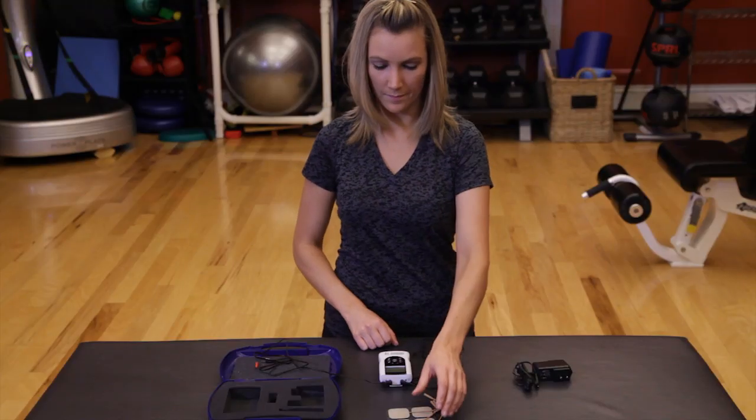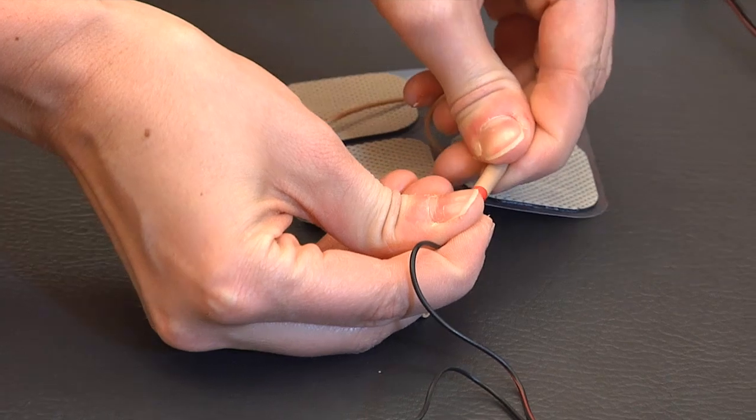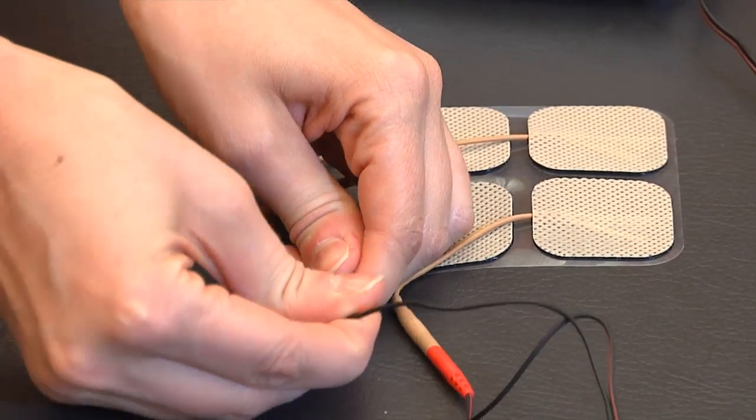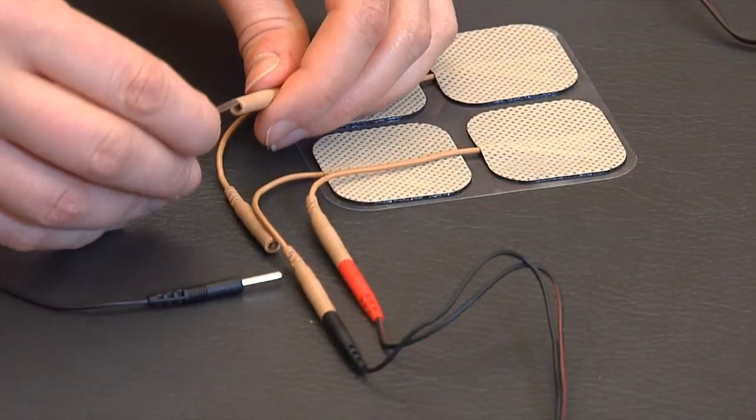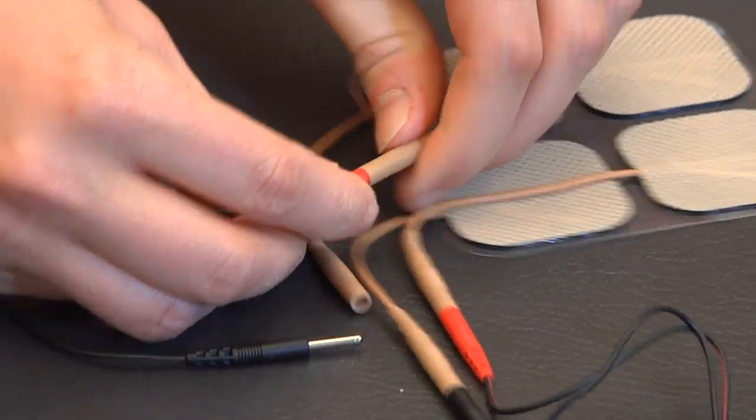Open the electrode package and remove the electrodes that are included with the device. Next, insert the red and black ends of the lead wires into each of the electrodes. It does not matter which lead wire goes into each electrode.